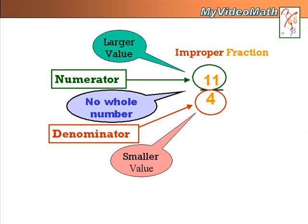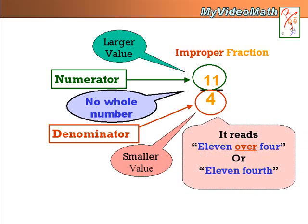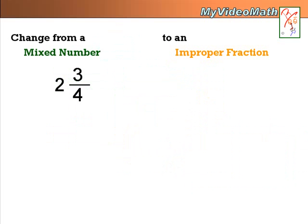So, this improper fraction reads 11 over 4, or 11 fourths. Change from a mixed number to an improper fraction. It takes a process. And this process is what we need to learn today.